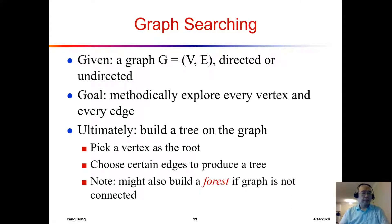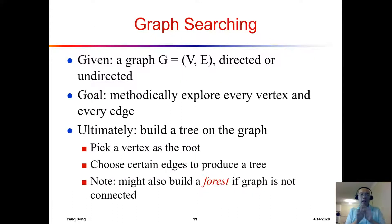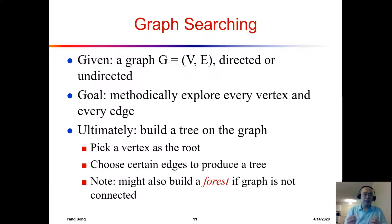The next topic is graph searching. Given a graph G — a collection of vertices and edges, directed or undirected — our goals are to explore all vertices and edges, and ultimately build a tree. We pick a vertex as the root and select certain edges to produce a tree structure. If not all vertices are connected, we may need to build a forest instead.